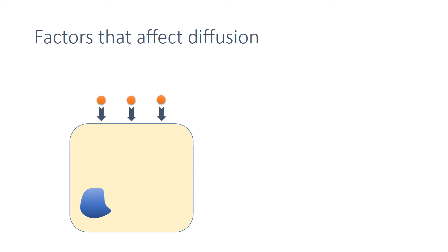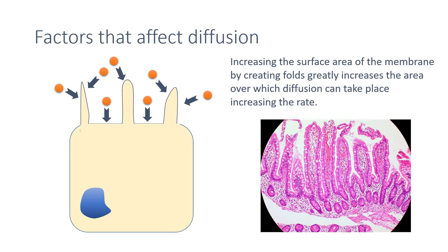Lastly, when you increase the surface area of a membrane, for example by adding extrusions and folds, you increase the area available for diffusion, and this increases the rate. This can be seen on most exchange surfaces, such as here with the villi in the small intestine.